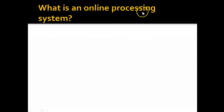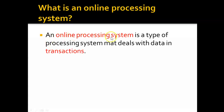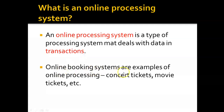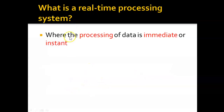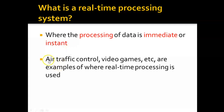What is an online processing system? An online processing system is a type of processing system that deals with data in transactions. Online booking systems are examples — such as booking concert tickets or movie tickets. What is a real-time processing system? This is where processing of data is immediate or instant. Examples include air traffic control and video games.